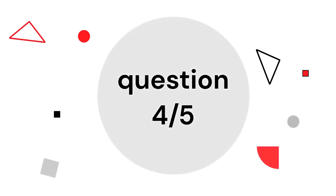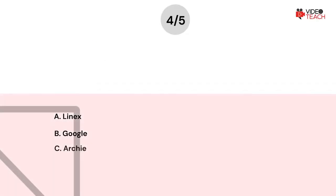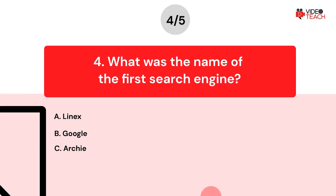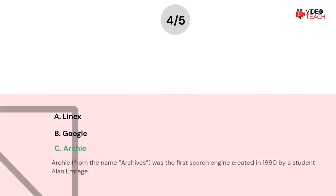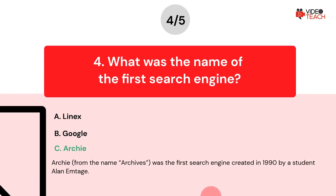Question number four. What was the name of the first search engine? Option A: Linux. Option B: Google. Option C: Archie. Now you have about 15 seconds to think about your answer. The correct answer is C. Archie, from the name Archives, was the first search engine, created in 1990 by a student Alan Imtaj.